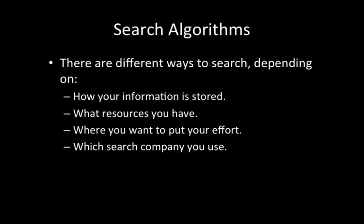Now, there are many different search algorithms because there are different ways to search depending upon how the information is stored. Did you sort it? Didn't you sort it? What resources you have? Sometimes we want to be able to do something that works slowly because we've got a lot of storage available. Sometimes we want it to work really quickly. Do we want to sort something first and then search over it, or do we just want to search over what we have? Effectively, if you remember my sock example from before, it's the amount of work you're prepared to do to organise your sock drawer in order to make it easier to find your socks in the future.